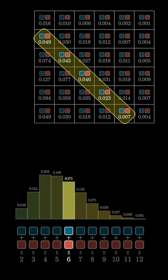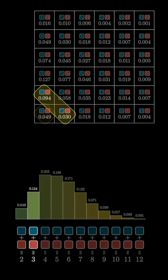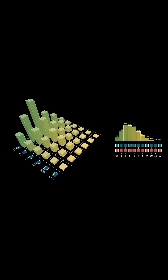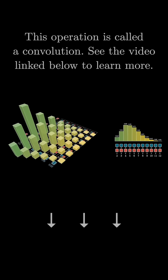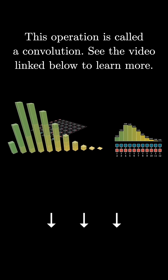Likewise, all of those pairs of dice values that add up to 7 sit on another diagonal, and so on. So to think about the distribution for all possible sums, what you can think about is collapsing this full three-dimensional plot along a diagonal direction, adding up all the heights of these bars along each one of these diagonals.